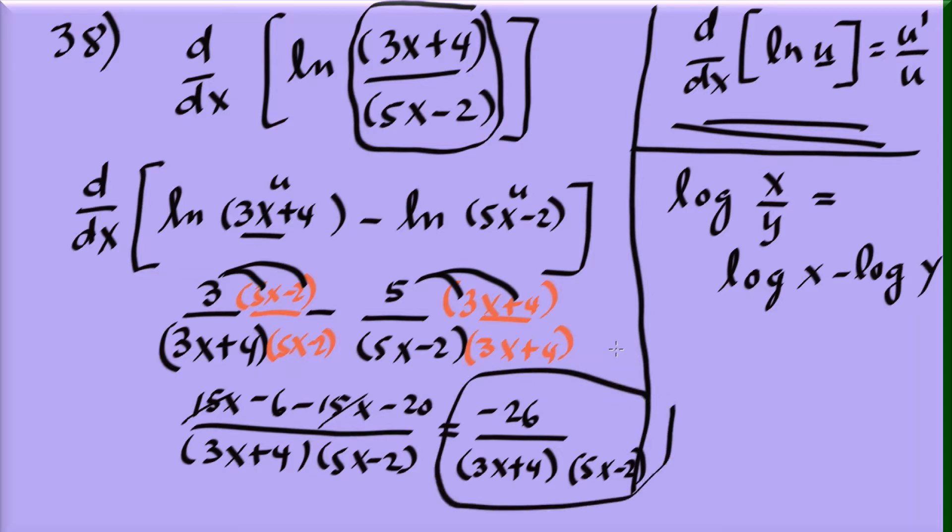So our final derivative is negative 26 over (3x plus 4)(5x minus 2).